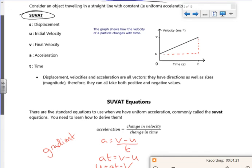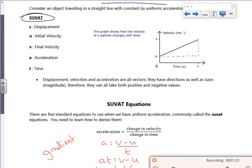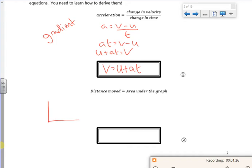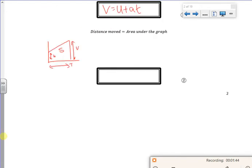Now if I look at the area under the curve, I've got like a little trapezium, so it goes U up here, V up here, T going across. Now the area under the curve is the displacement, and I call that S. So I've just got S equals the average of the parallel sides times by time.